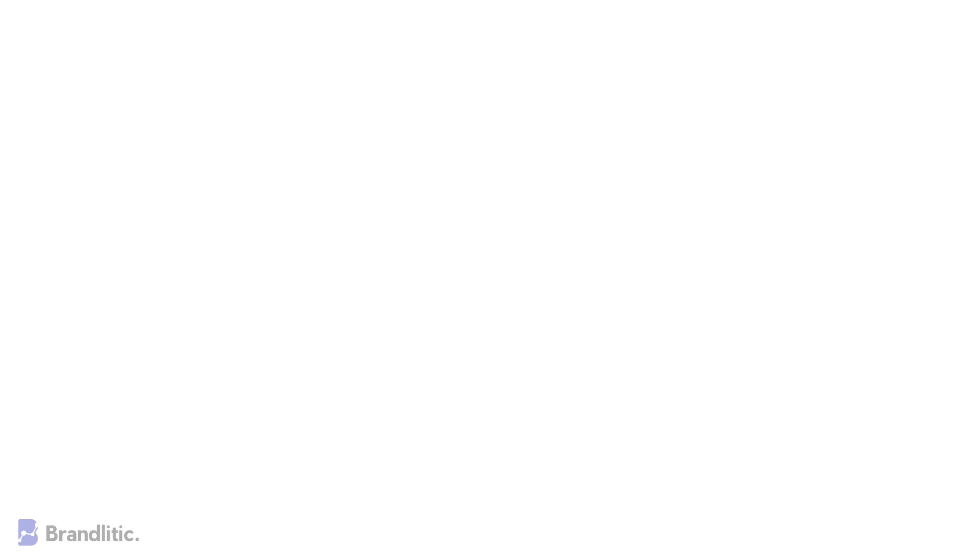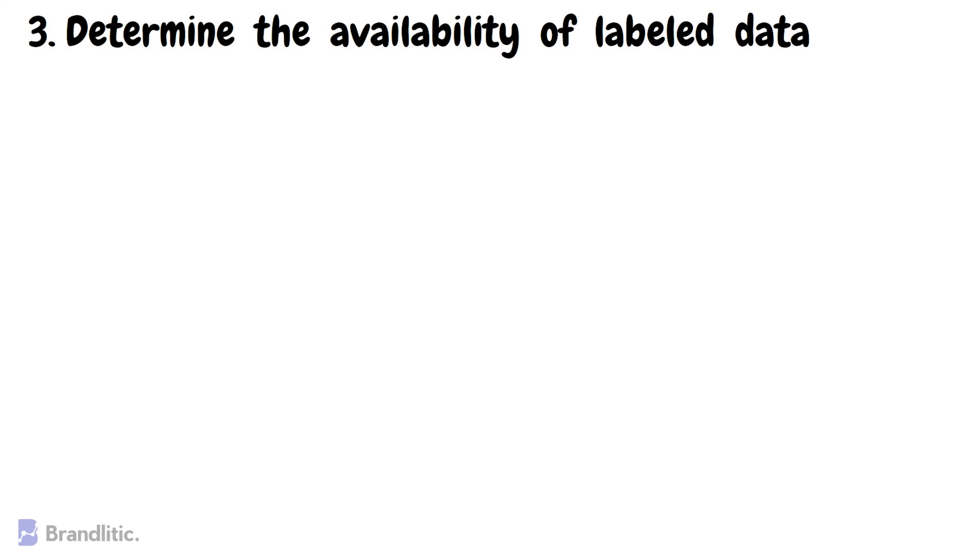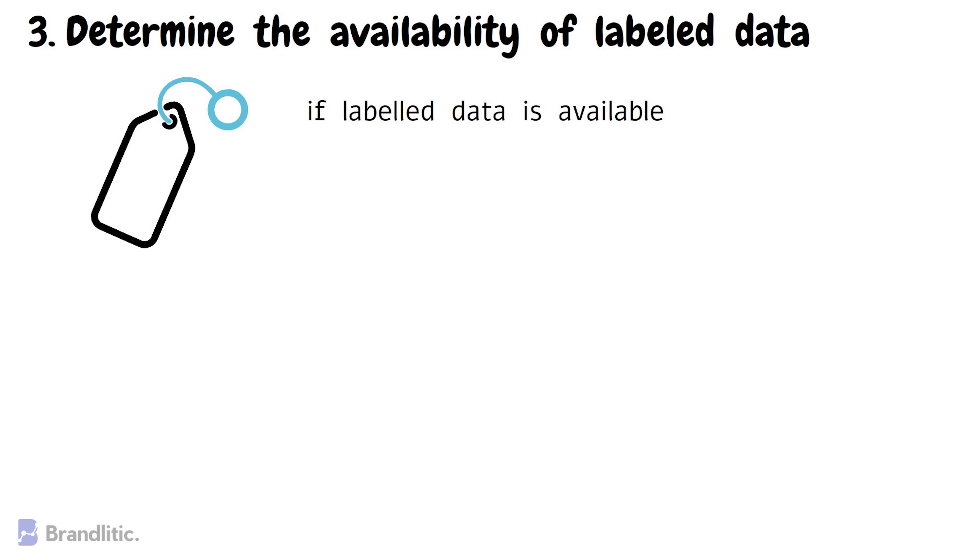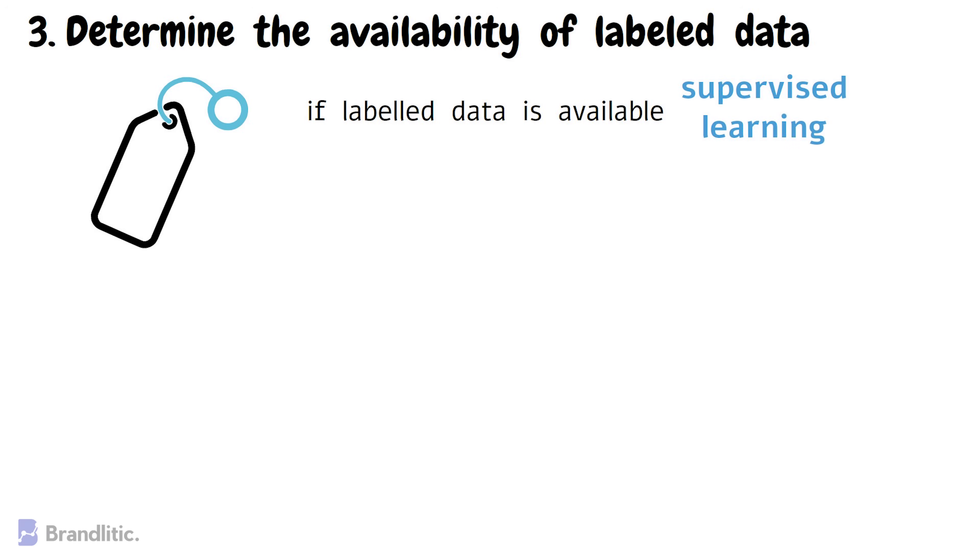Number three, determine the availability of labeled data. The availability of labeled data is another important factor to consider when choosing a neural network. Supervised learning which requires labeled data is the most common type of machine learning used in neural networks. However, if labeled data is not available, unsupervised learning methods can be used instead.